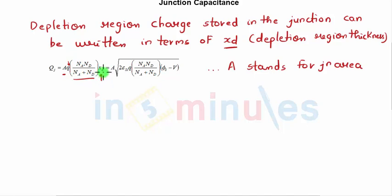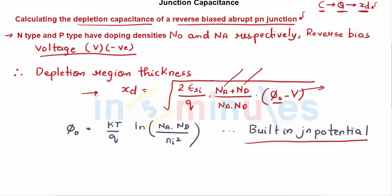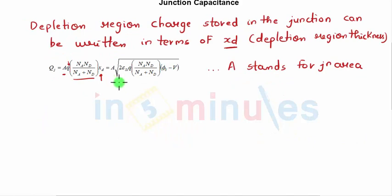Because it's in 3D, area times thickness gives us the depletion region charge, which is A times XD. So let's put the value of XD here. Once you do that and rearrange the terms, you will get the value of QJ to be equal to this.